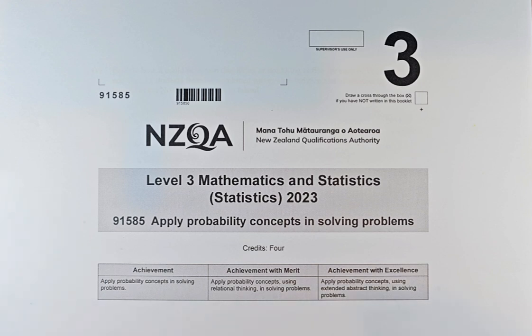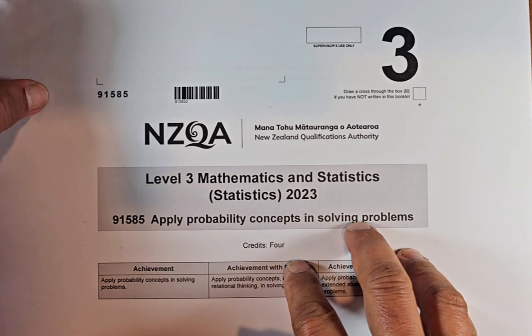let's do question 1A part 5. This is an excellence question — a short answer question. And if you can know how to argue and justify, you will get excellence in this question.